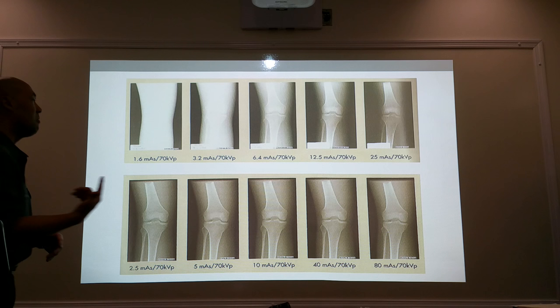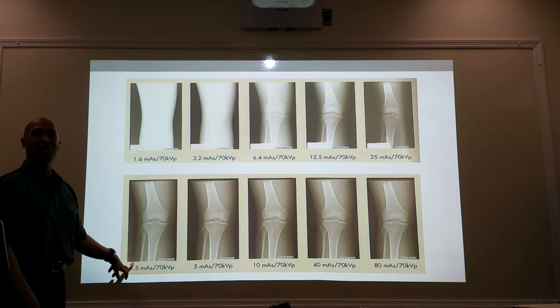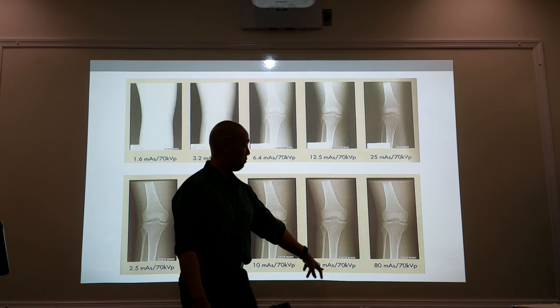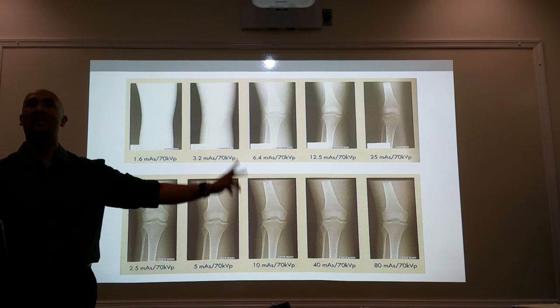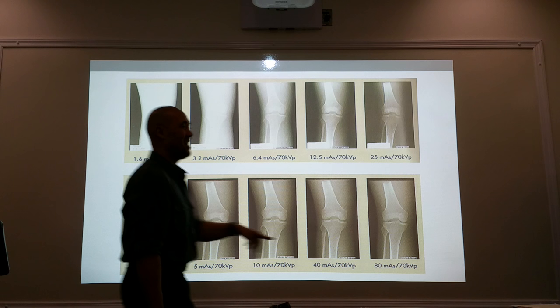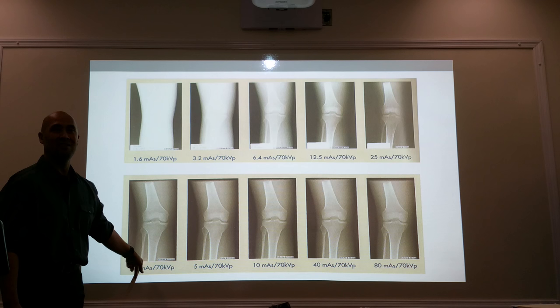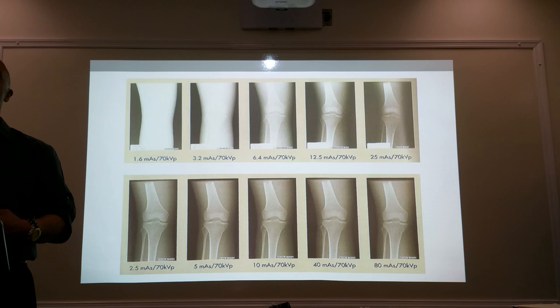Here is the same study with computerized radiography. At 2.5 mAs it looks good. We doubled it to 5 — looks the same. Doubled 5 to 10 mAs — still looks the same. Then 40 mAs, then 80 mAs. We went from 2.5 to 280 — this is almost 35 times the patient exposure. We could be killing our patients and not know it because the images look good every time. Your 80 mAs looks just as good as your 2.5 mAs.